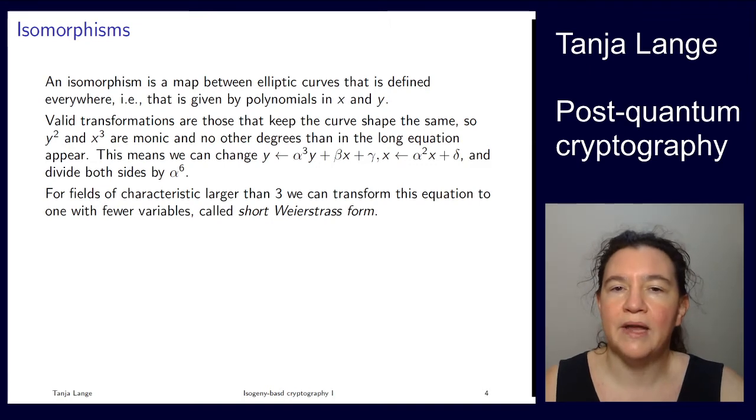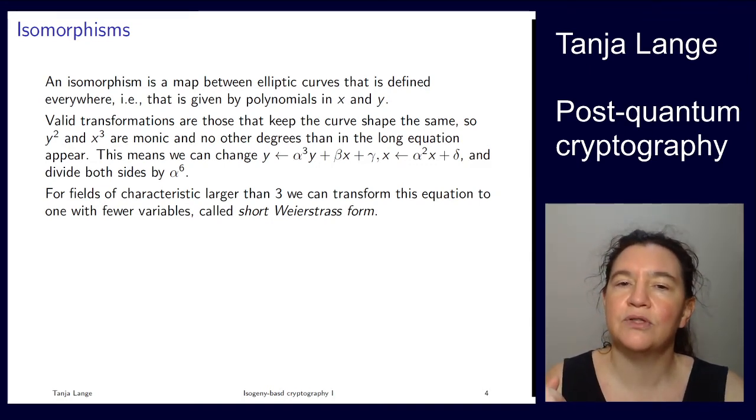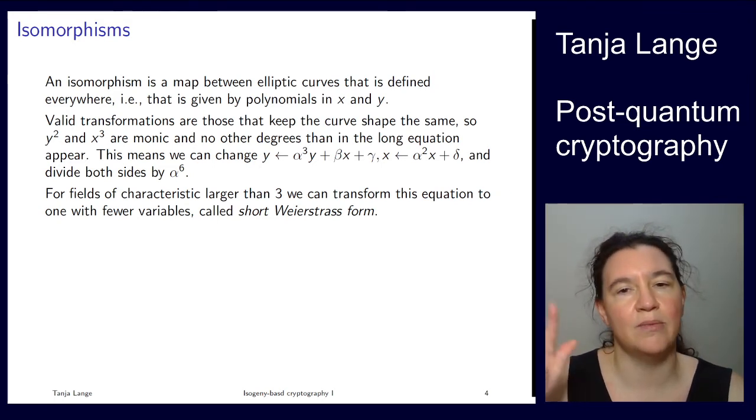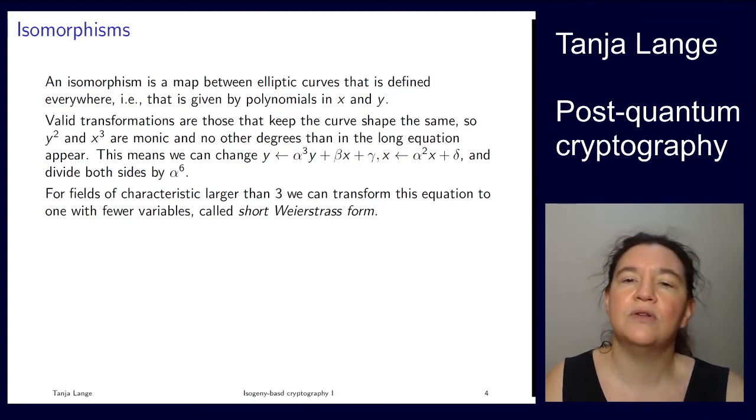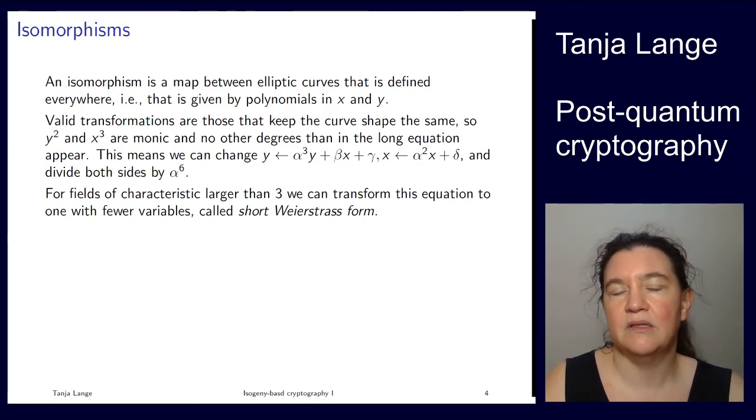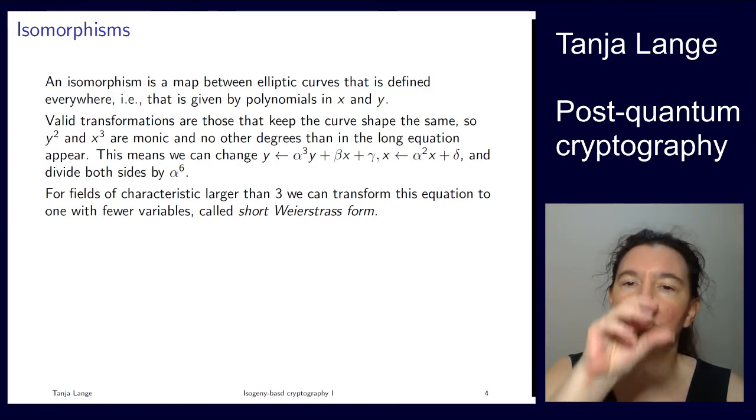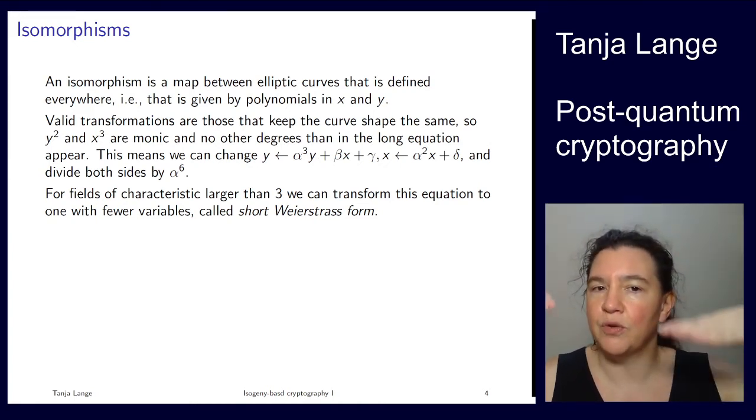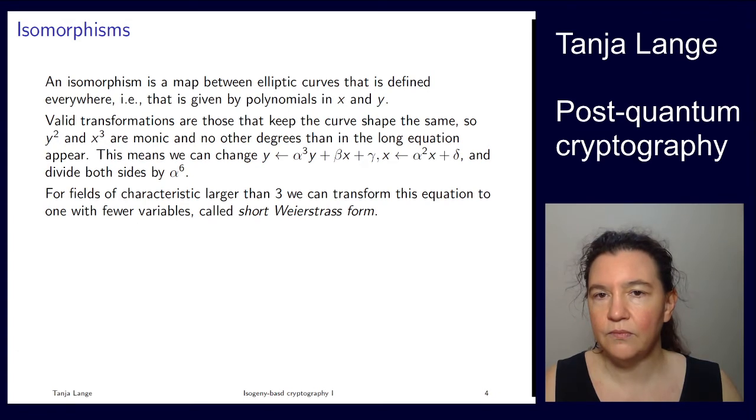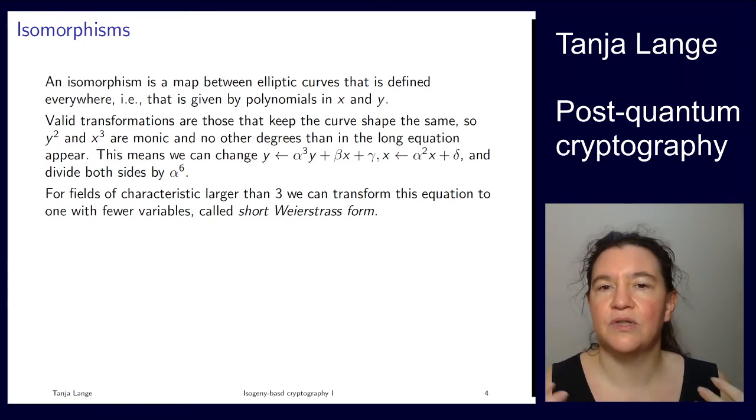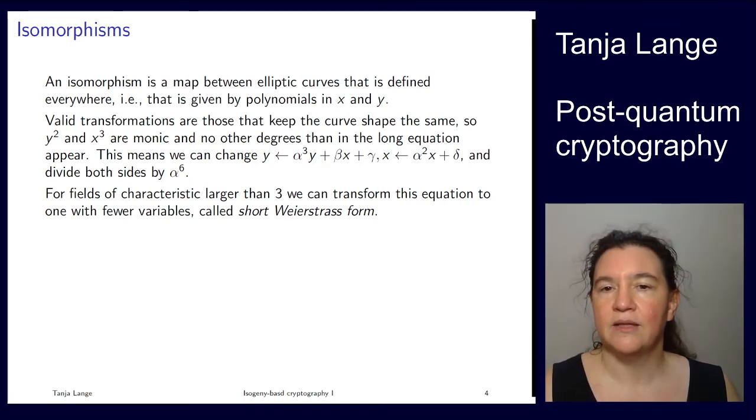We can move y by linear terms and be careful about scaling. I said it has to stay monic, but there's an alpha cubed. I'm also introducing alpha squared for x. I get the alpha 3 squared from y squared and alpha 2 cubed from x squared, so I get it monic again if I divide by alpha to the 6. When I transform x, I can't do anything other than this degree 1 linear map, because anything in x would get into y and give y cubed. These are isomorphisms between elliptic curves. We can use these to make our curve equations simpler.